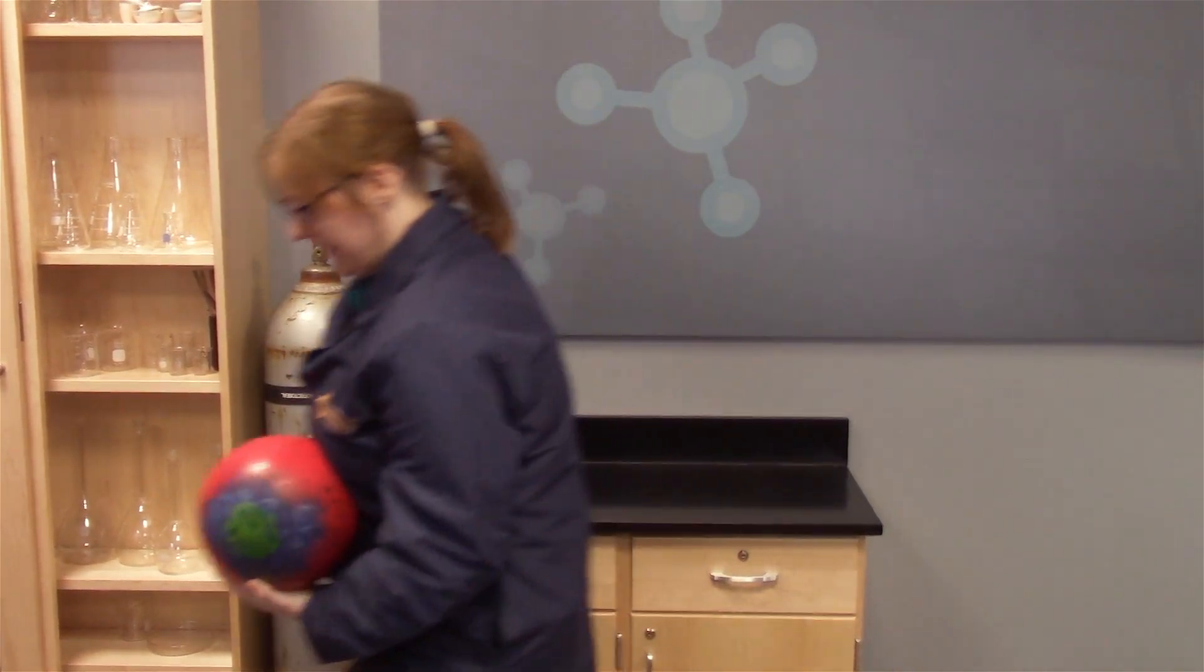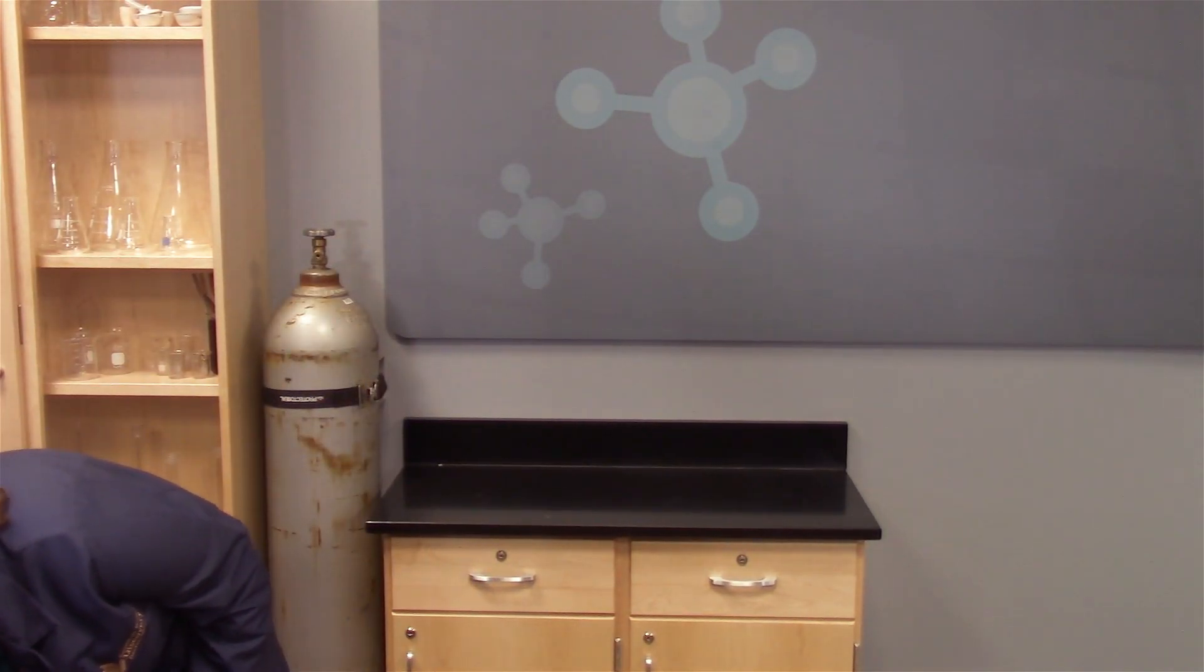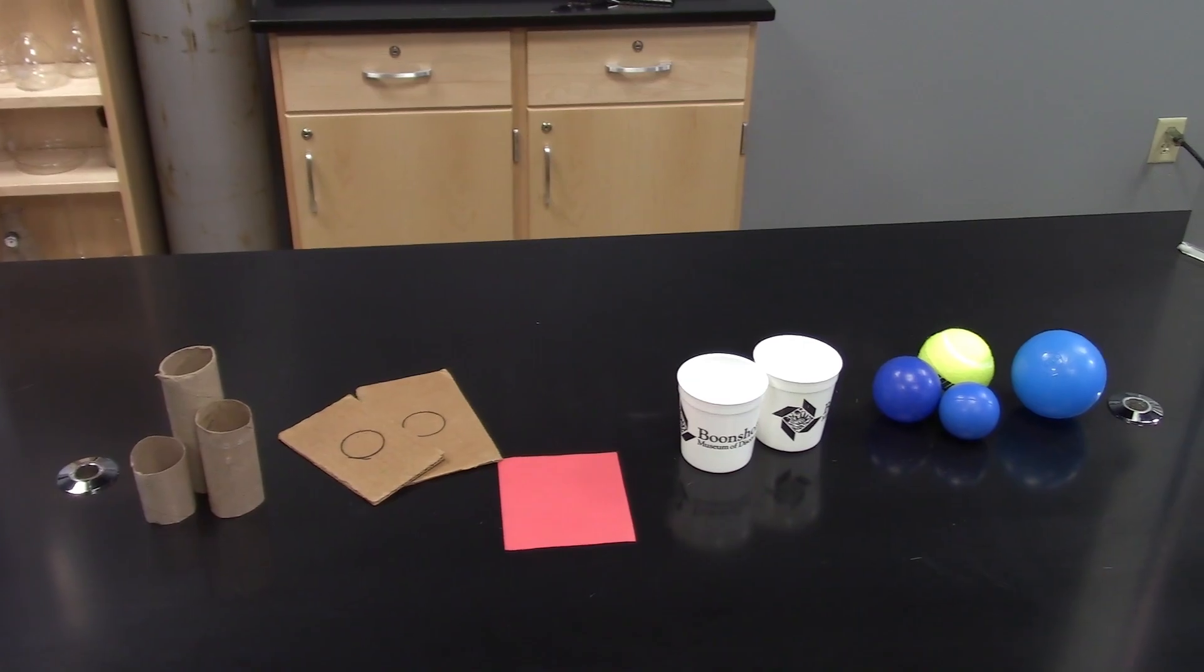So this bowling ball has more inertia than this tennis ball. The more massive object is more likely to keep doing what it's doing. Awesome. Let's get this out of the way.